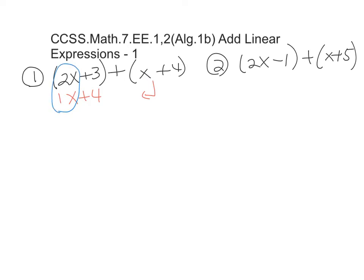So it's 2x plus x is 3x, and 3 plus 4 is 7. That's as far as you can go. So you also need to know when to stop.